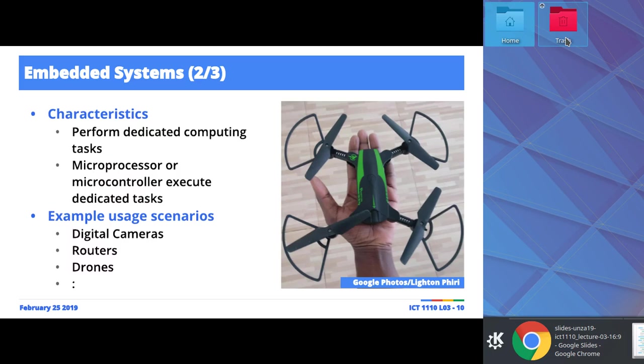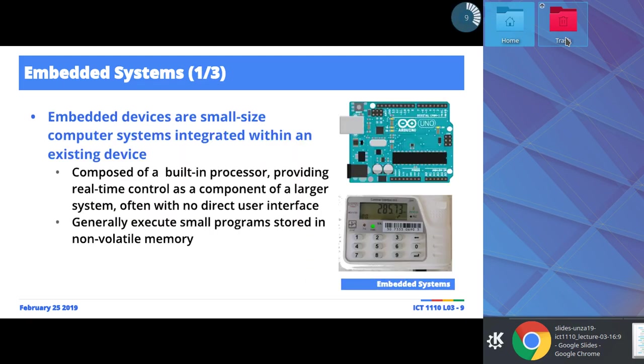Embedded systems typically perform what you'd call single-function dedicated tasks. Compare this to a microcomputer where I can browse the internet, watch videos, listen to music, and typeset documents — a whole range of functionalities. But for embedded systems, generally they are dedicated to specific activities. Why would you need an interface with a single-function device?